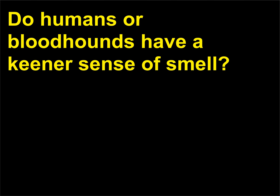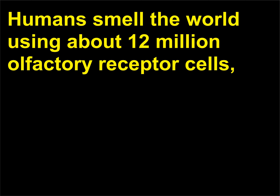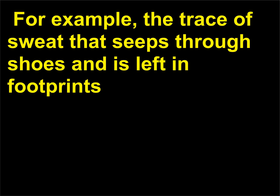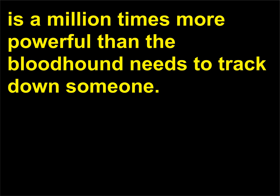Do humans or bloodhounds have a keener sense of smell? Humans smell the world using about 12 million olfactory receptor cells, whereas bloodhounds have 4 billion such cells and therefore a much better sense of smell. For example, the trace of sweat that seeps through shoes and is left in footprints is a million times more powerful than the bloodhound needs to track down someone.